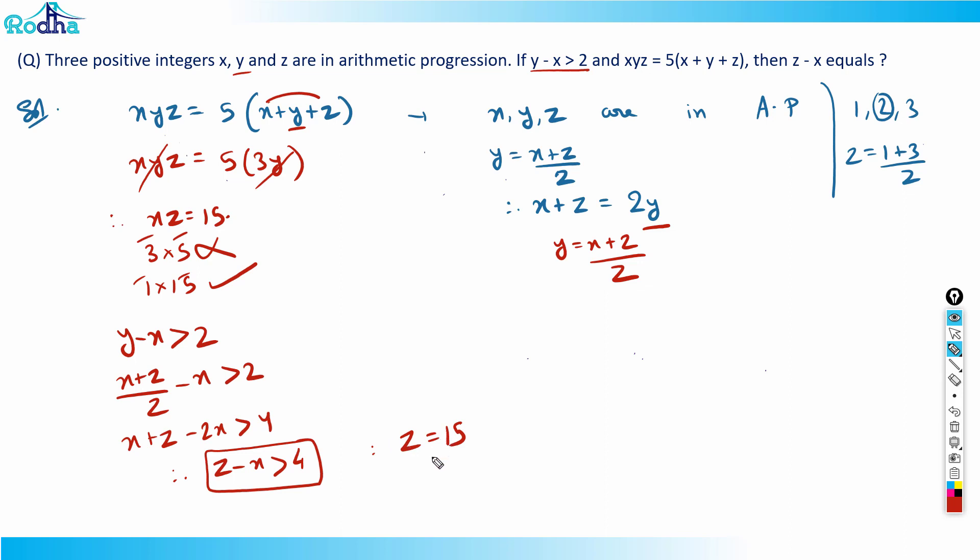Z is 15 and x should be 1. This is the combination. If z is 15 and x is 1, I can get the value of y also. What is y? 15 plus 1 is 16, which is 2y, so y will be equal to 8.